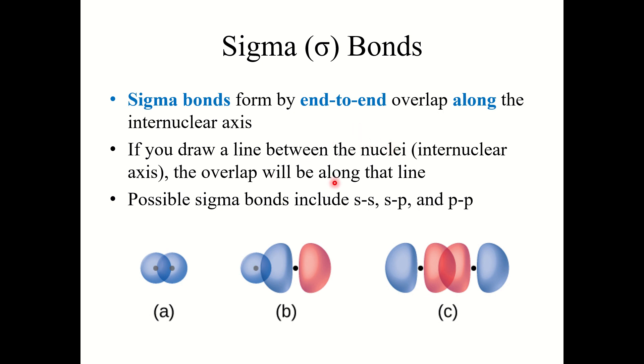Now possible sigma bonds can include s-to-s orbitals overlapping, s and p orbitals overlapping, or even 2p orbitals overlapping. So here we've got two s orbitals overlapping to form this bond, and the overlap is along the internuclear axis. Same thing here with this s and this p, again the interaction is along the internuclear axis, and with these two p orbitals here, again the overlap is right along that internuclear axis. These are all visual representations of sigma bonds.